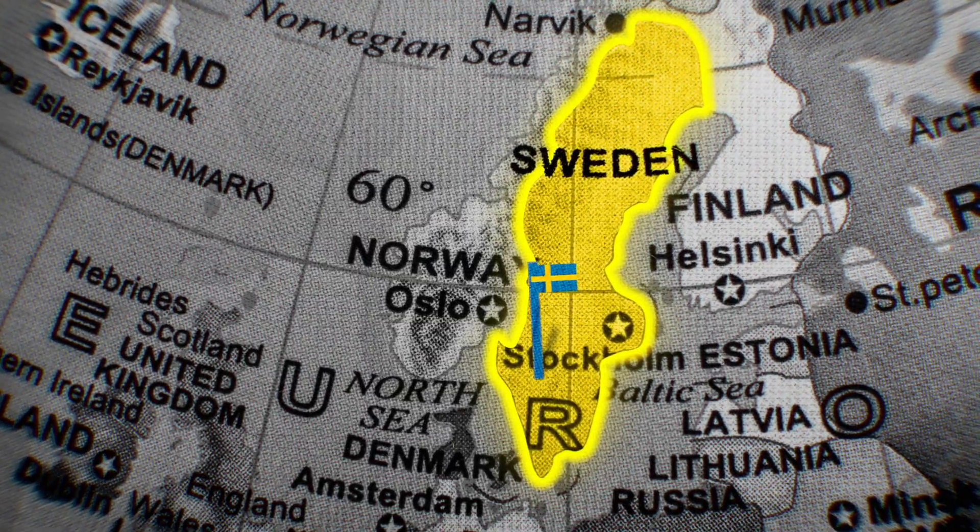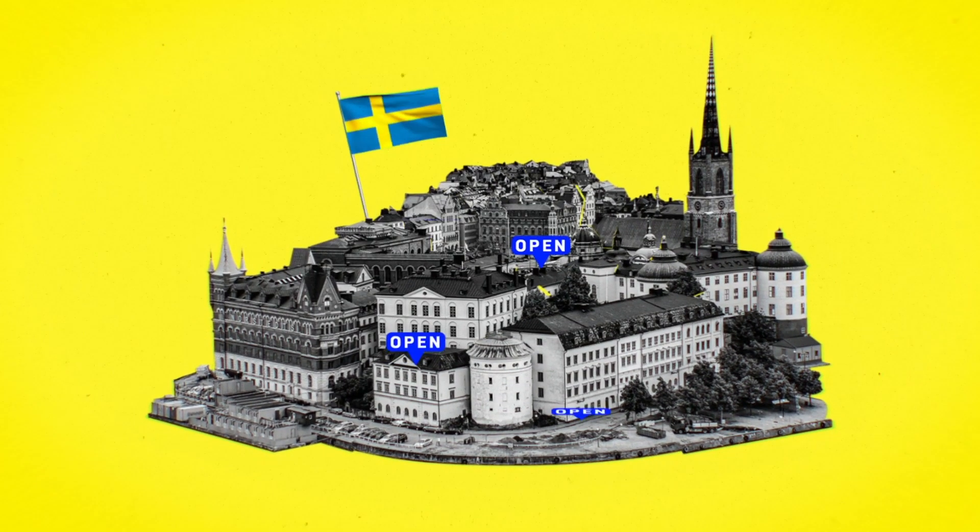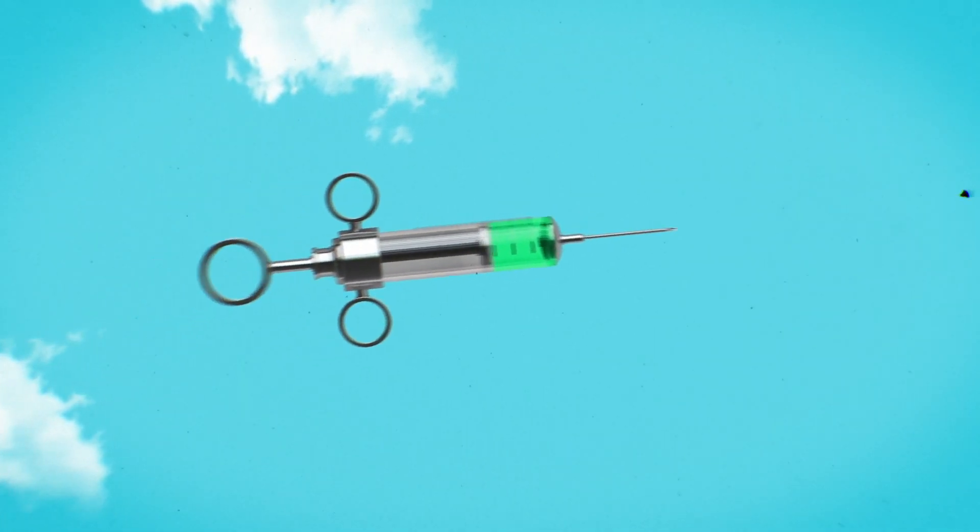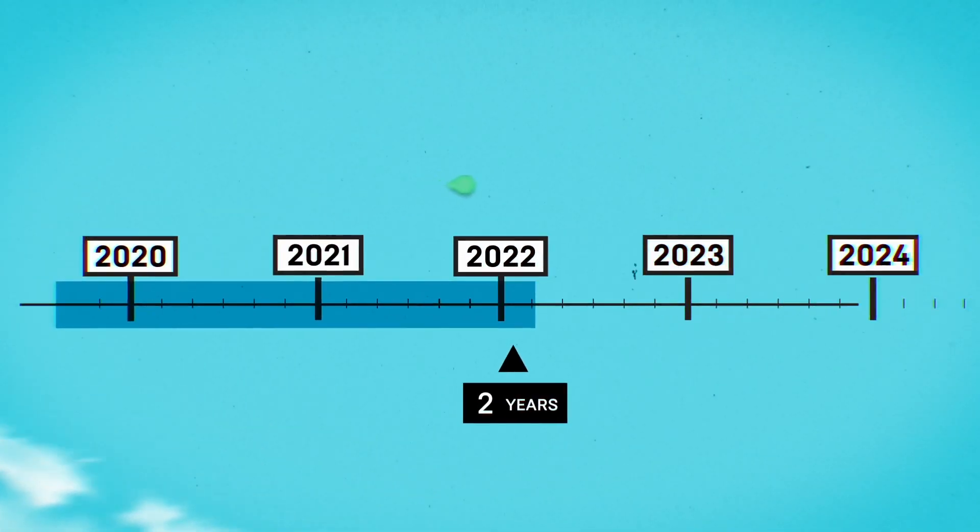Sweden is the only country pursuing herd immunity in this way, opting to keep schools and businesses open rather than lock down the entire country. The other way of achieving herd immunity is with a vaccine, but this could be years away.